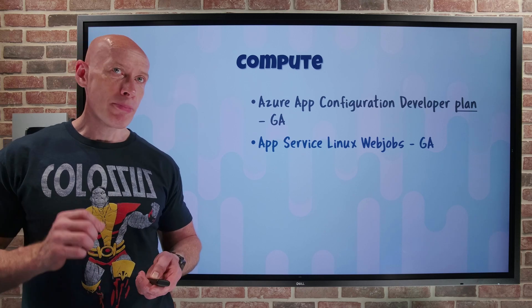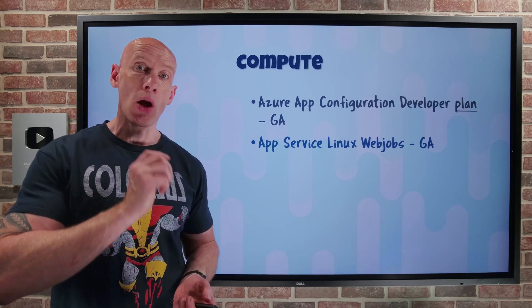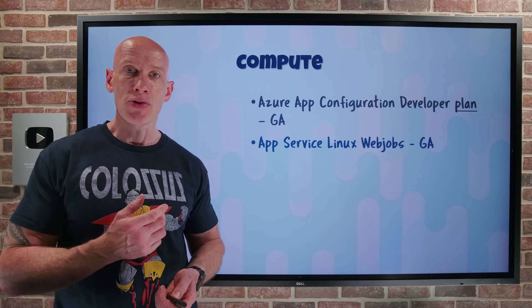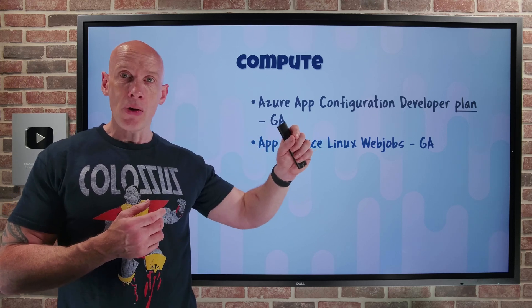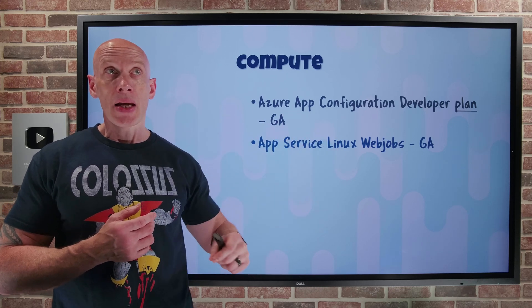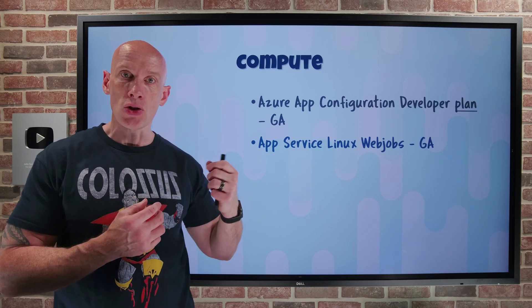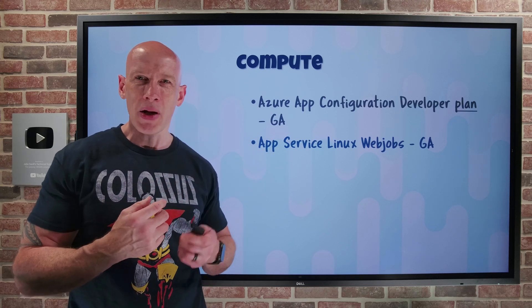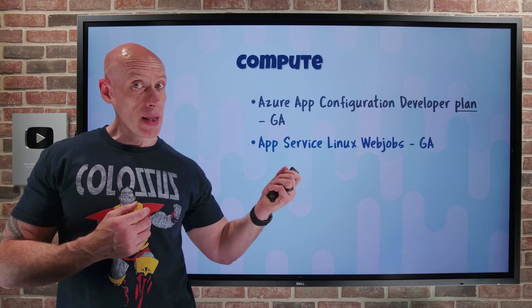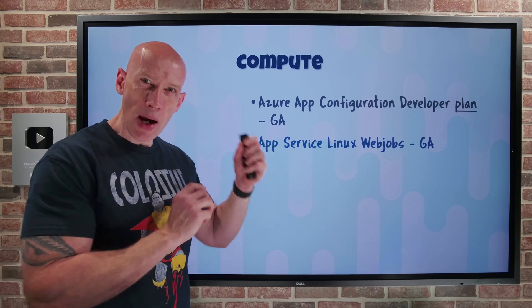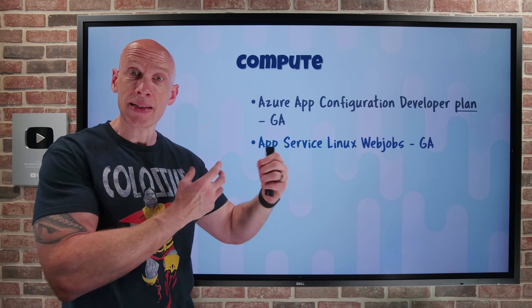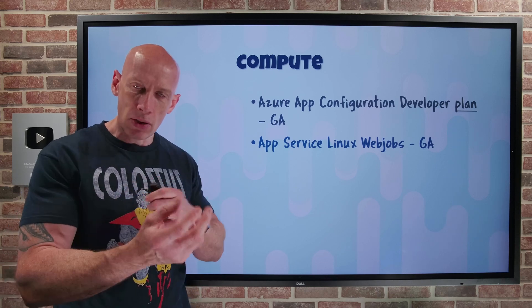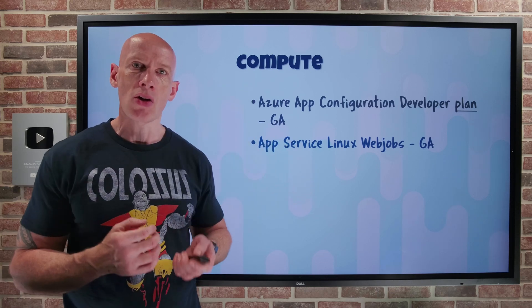App Service now has web job support for Linux. Previously web jobs were only available as part of the Windows environment, but now you can use it with both Linux code and Linux container-based app services. Think of a web job as something running in the background — either continuously, manually triggered, or running on a schedule via a cron job. It's very different from a regular web app, which is normally triggered by an HTTP request. You can use shell scripts within these, and also whatever matches the runtime of the web app — so a Python script for a Python app, or JavaScript for a Node.js app.